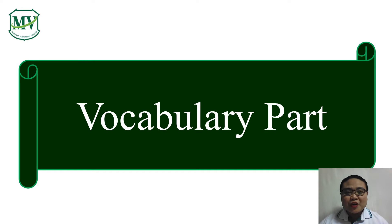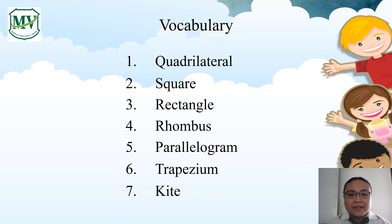Let's learn some vocabulary words. Here are some important words for this lesson. Can you say them with me? Here we go! Quadrilateral. Square. Rectangle. Rhombus. Parallelogram. Trapezium. Kite. That's great!